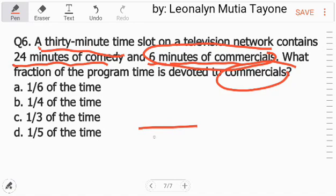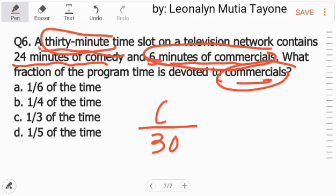Ang denominator natin ay yung total na 30 minutes. Tapos yung numerator natin ay yung commercial na 6 minutes. Take note kasi minsan sa mga given problems, ang isa ay hours, ang isa naman ay minutes — pareho silang minutes so wala tayong problema dyan. So ang denominator natin ay 30 minutes, at ang numerator ay yung 6 minutes of commercial.